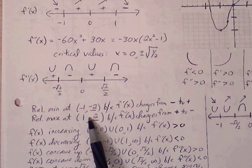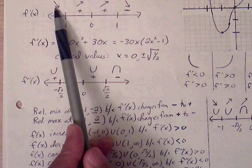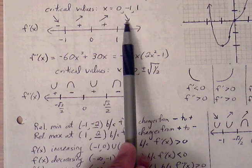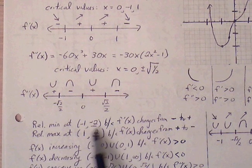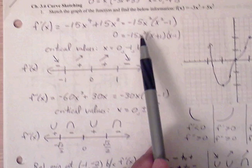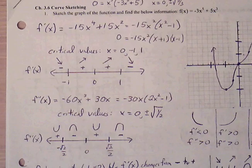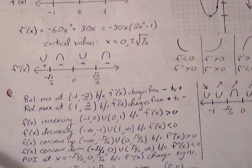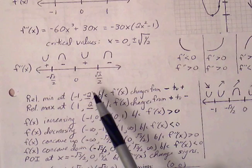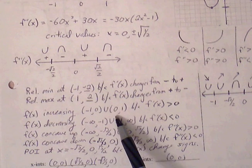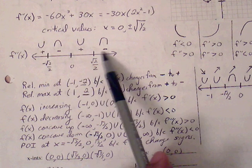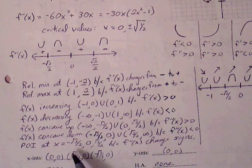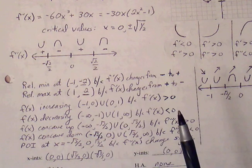Based on the first derivative sign line, there is a relative minimum at x equals negative 1 — slope changes from negative to positive — and a relative maximum at x equals 1, where slope changes from positive to negative. To find the ordered pairs for these extrema or points of inflection, plug the x-values back into the original function. The second derivative sign line also tells us the intervals of concave up and concave down.